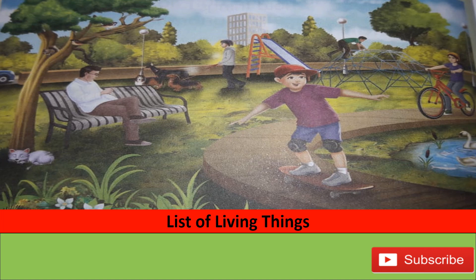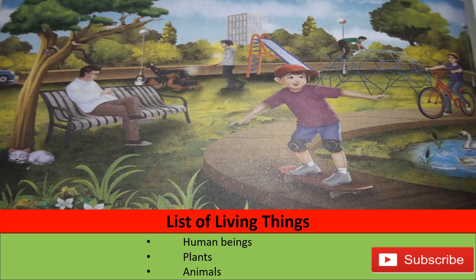So first of all, we can clearly see human beings in this picture. Right after human beings, we can see plants — there are so many trees, grass, small plants, and flowers as well. After that, we can see animals as well. You can see a cat sleeping under the tree, two swans are in the lake, and birds bhi jo hain wo animals mein aati hain — so we can see a bird on the tree as well.